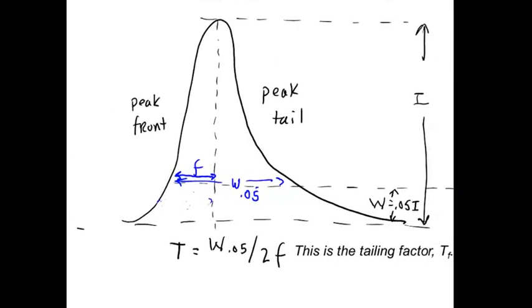The other way that I've seen a lot of people do it is to use something called the tailing factor, which is really particularly specific to tailing. You take the whole width of the peak, now at 5% of the peak max, and you divide that by twice the sort of trailing width. So these are just two examples.